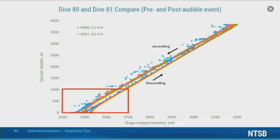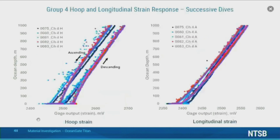Moving forward in time and looking at dive 81, the dive immediately after the event, we see a change in the initial strain response of the hull. The next slide focuses on the initial and final 1,000 meters of the dive. The graph on the left shows the hoop strain and the graph on the right shows the longitudinal strain. Changes in the initial strain response are seen in both directions. Furthermore, the changes persist from dive 81 through dive 83, which is the last dive for which we have strain data.